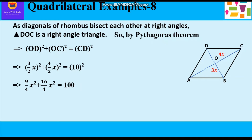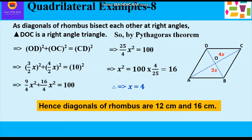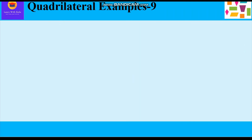Solving further: 9x²/4 + 16x²/4 = 100, so 25x²/4 = 100. Cross-multiplying: x² = 100 × 4/25 = 16, therefore x = 4 cm. The diagonals of the rhombus are BD = 3×4 = 12 cm and AC = 4×4 = 16 cm. Each side of the rhombus is 10 cm, calculated earlier. Now let us take up the next example.